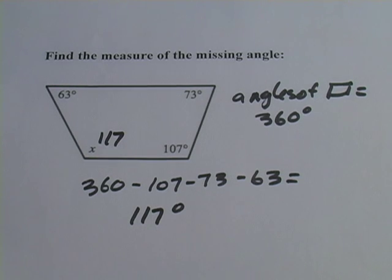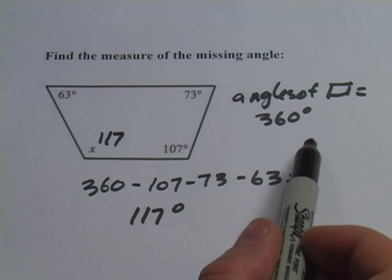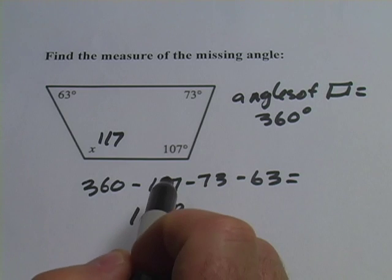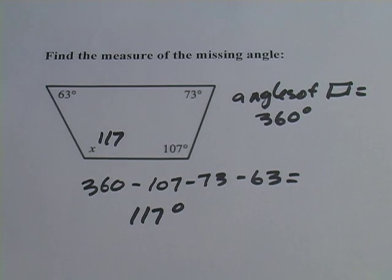So remember, the sum of the angles of a triangle, always 180 degrees. The sum of the angles of a quadrilateral, always 360 degrees. Just subtract the other angles and you'll find the one you're looking for.